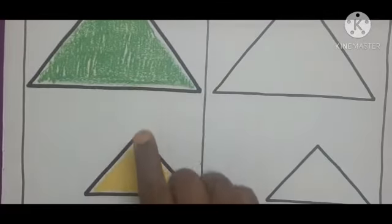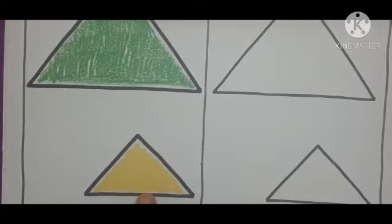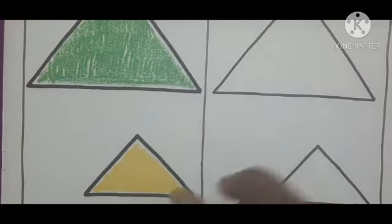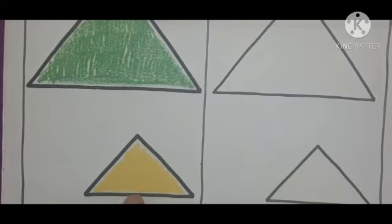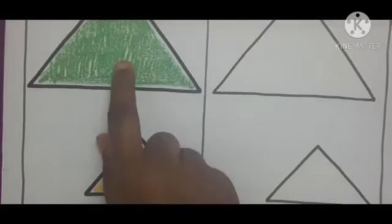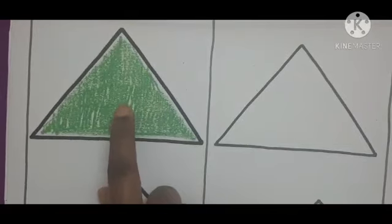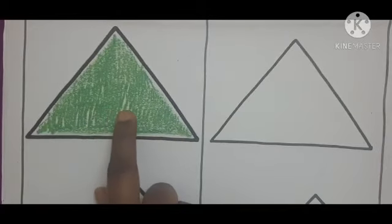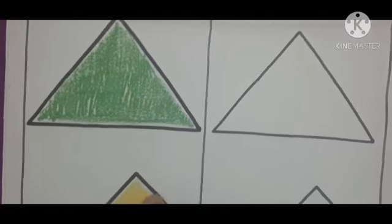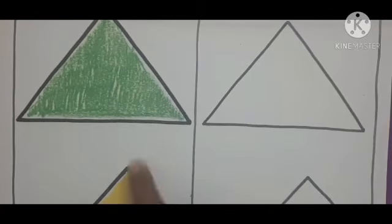Here, one more triangle is there. This is a small triangle. What is the color of this triangle? Yellow. And this one is green in color. This is green triangle. This is yellow triangle.